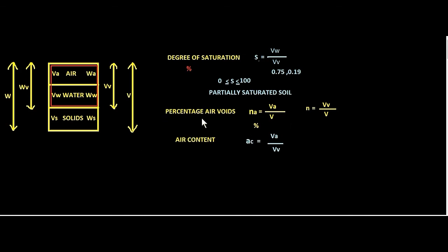Now let's look at the next term: air content. Percentage air voids and air content are similar but there is a slight difference. Air content is the ratio of volume of air to the volume of voids — it expresses the amount of air present in the voids. We can relate this to the degree of saturation: in degree of saturation, volume of water is compared to volume of voids, whereas in air content, volume of air is compared to volume of voids.